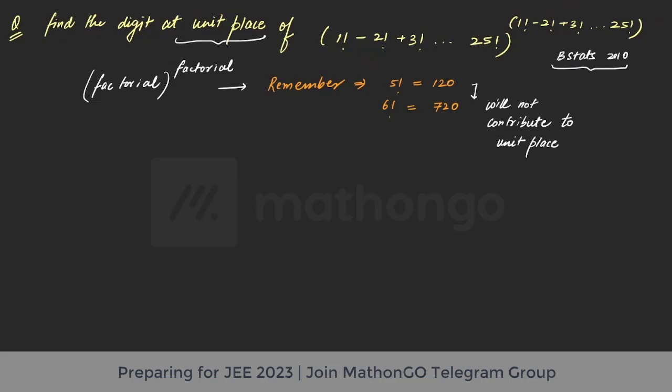They cannot contribute to the unit place, right. That's a basic thing because 0 is there in the unit place. But now the question we have is having addition then subtraction. So if we solve this, it's 1 minus 2 plus 6, then you have minus 24. If you notice, there is again 120 here.